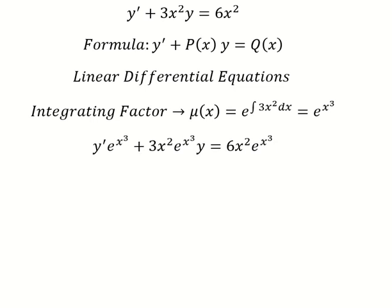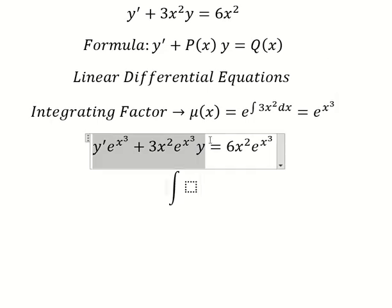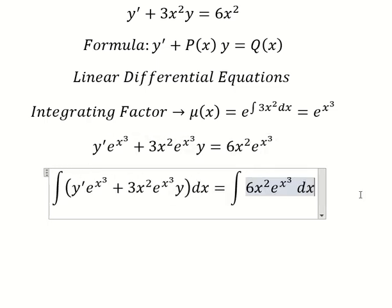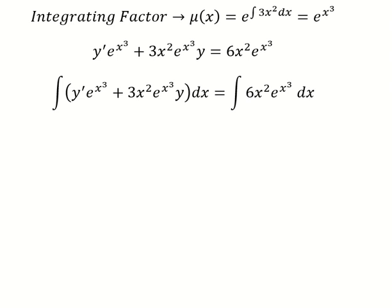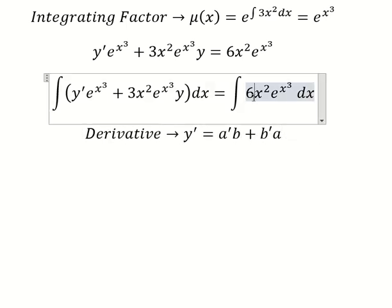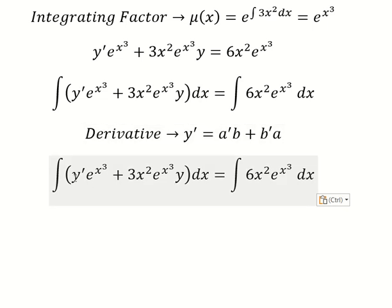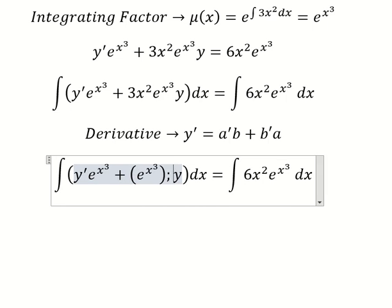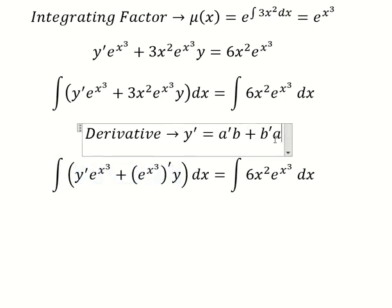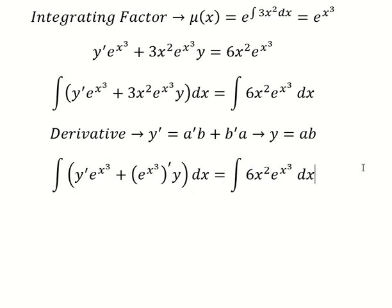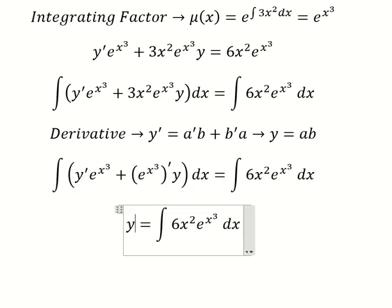Next we apply the integral to both sides. We can apply the formula here — on the left side we have the first derivative of one function multiplied by the other, plus the first derivative of the second function multiplied by the first. The result of this interpretation gives us y equals a times b.